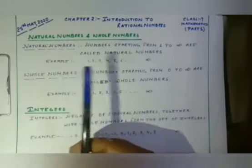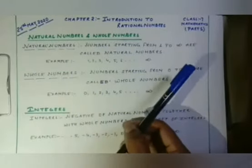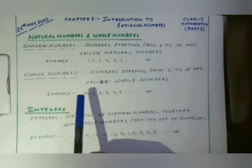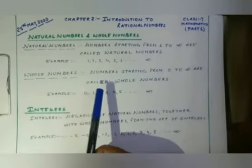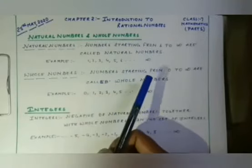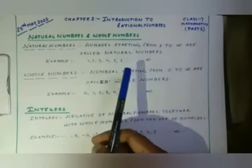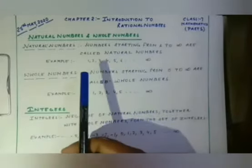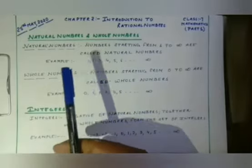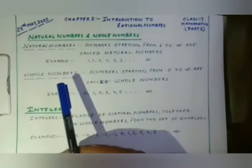What are whole numbers? Numbers starting from 0 to infinity are called whole numbers. For example: 0, 1, 2, 3, 4, 5, and so on to infinity. In another way, we can say that if we include 0 in front of the natural numbers, it becomes whole numbers.